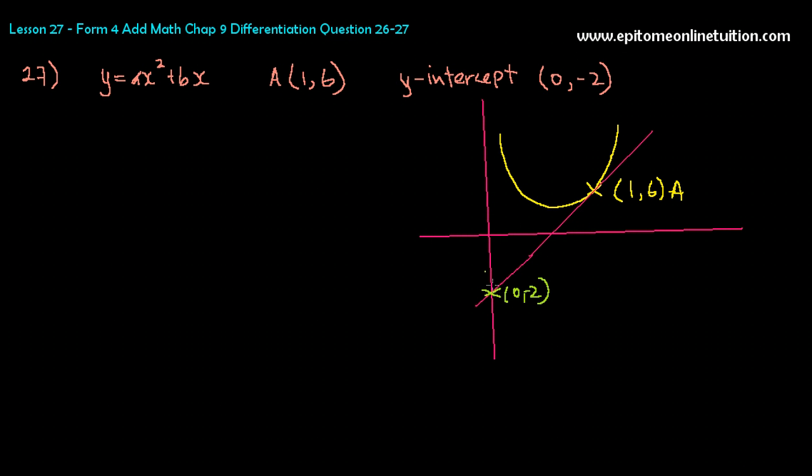All right, now, remember what you have to find. You have to find A and B. Two unknowns means two equations. First equation, you do the same thing. Put the point into this original curve equation. Put a point in and you get your first equation. So let's put it in first. Y is 6. A is unknown. X is 1. So that's A plus B. So you have your first equation.